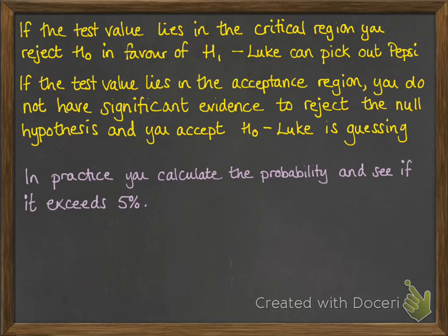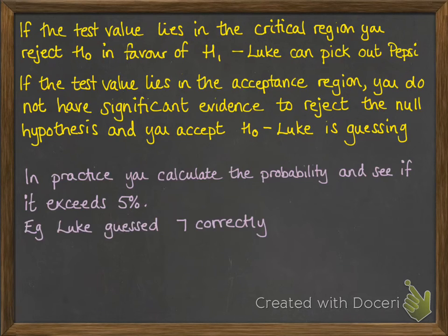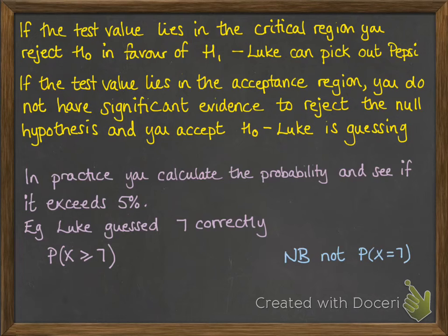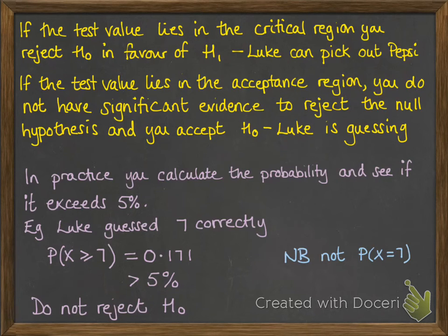In practice, we don't calculate each different level and see which is closest to 5%. We calculate the probability of the actual result and test whether it exceeds 5%. In this example, Luke guessed 7 of them correctly. So we work out the probability that X is greater than or equal to 7 — not just X equals 7, because we're looking for the critical region and want the chances of 7 or more to be less than 5%. That came to 0.171, which is more than 5%, so it does not fall in the critical region and we do not reject the null hypothesis.